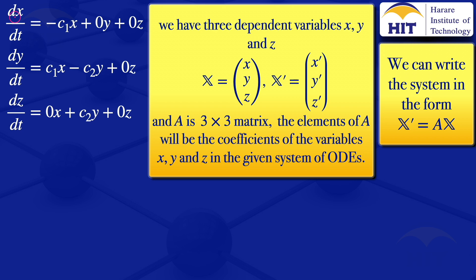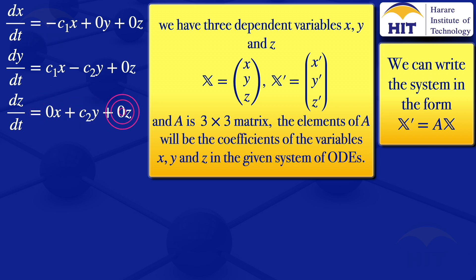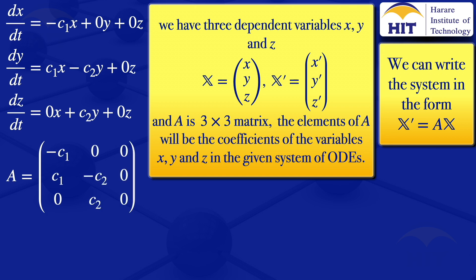For the first equation, the coefficients are: X gets minus C1, Y gets 0, Z gets 0. For the second equation: X gets C1, Y gets minus C2, Z gets 0. For the third equation: X gets 0, Y gets C2, Z gets 0. These coefficients form matrix A, so A equals the 3 by 3 matrix: minus C1, 0, 0 in the first row; C1, minus C2, 0 in the second row; and 0, C2, 0 in the third row.